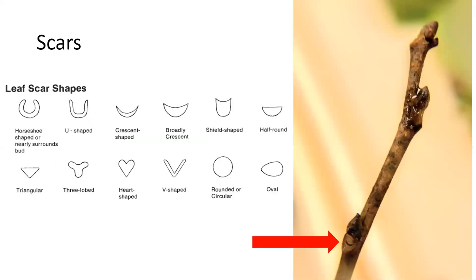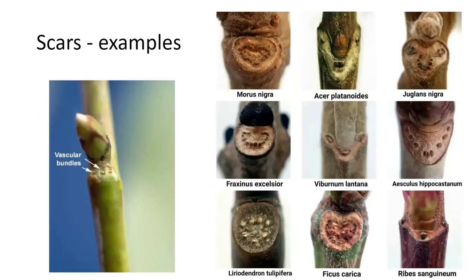Some trees have stipules — little leaf-like structures attached below the leaf. Scars can take on different shapes. Leaf scar shape can be all kinds of things — it can be half-round, and this can be diagnostic, really helping you tell species apart. This is essentially the basic shape of the petiole in cross-section as it was attached to the twig. Here are some photographs of different examples, with arrows pointing to the vascular bundle scars left on the twig.